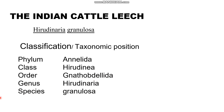Genus: Hirudinaria. Species: granulosa. So we study the zoological name or scientific name. The genus name comes first with a capital first letter, followed by a space and the species name in lowercase. Both words are written in italics. These two words — genus name and species name — form the binomial nomenclature.